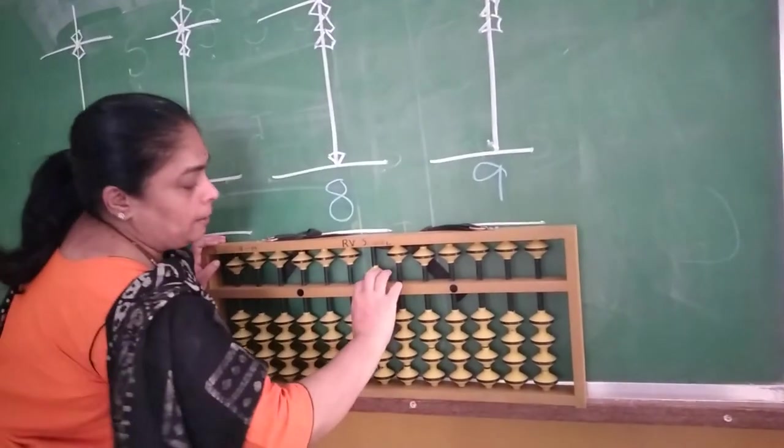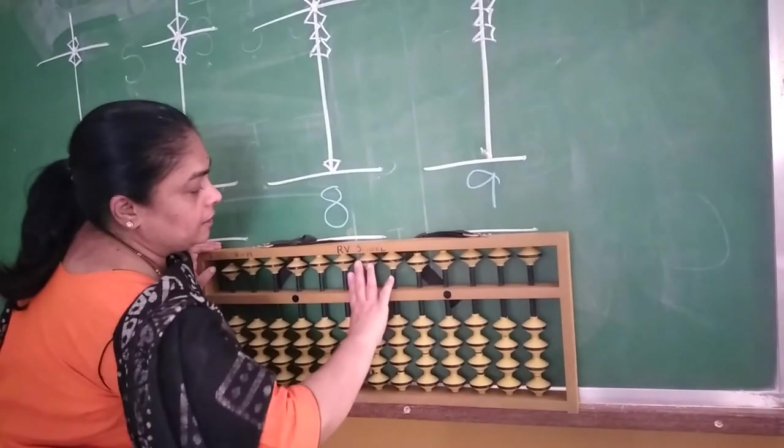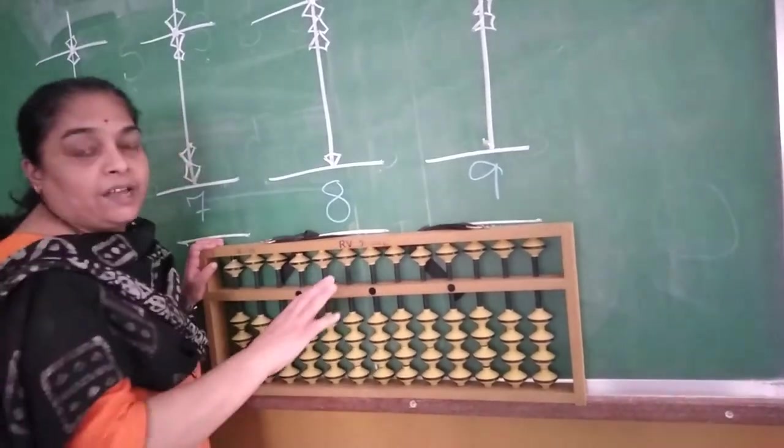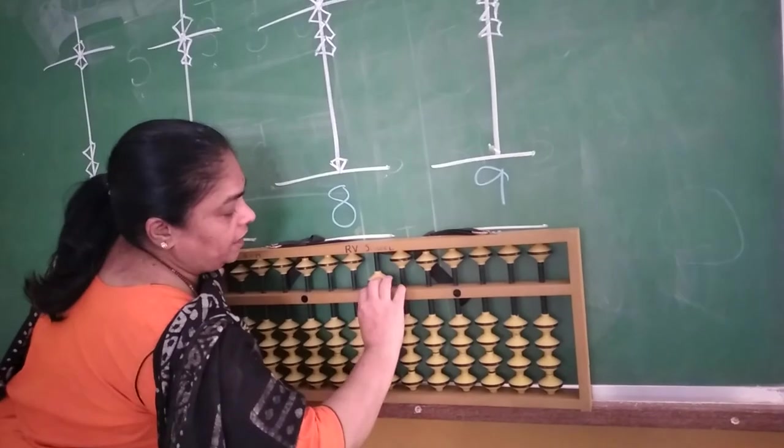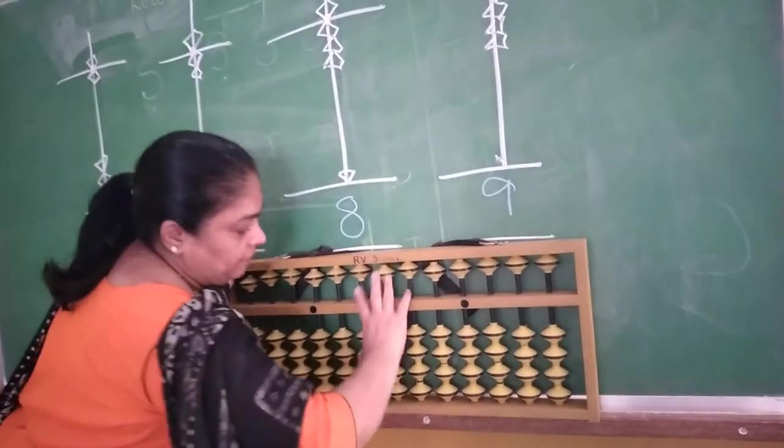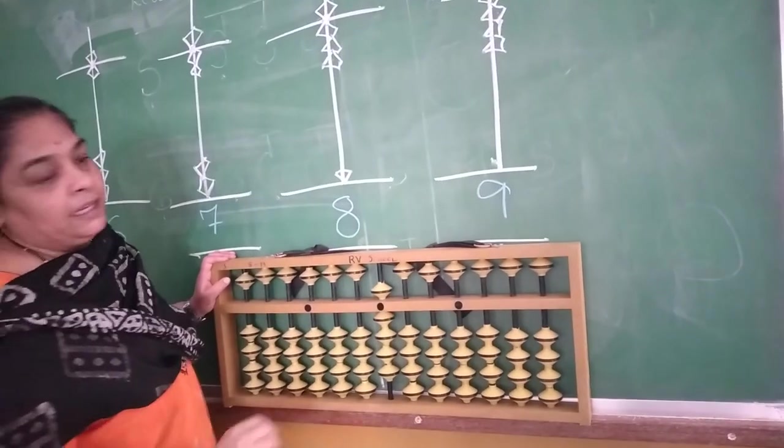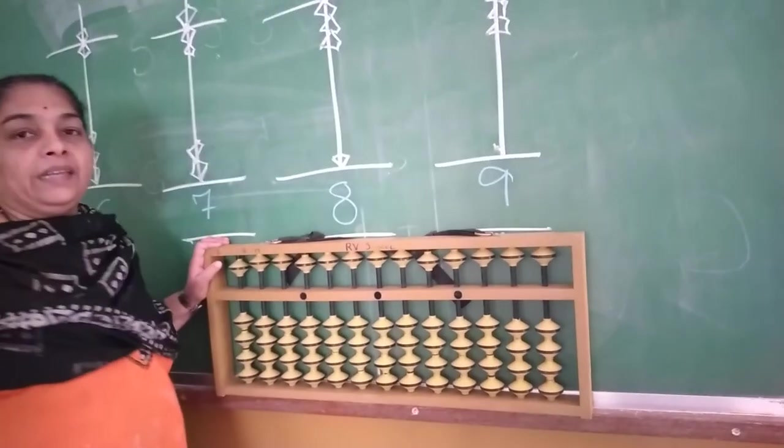seven, minus seven, okay? Seven, minus seven. Next, eight, minus eight. Nine, minus nine. Okay children.